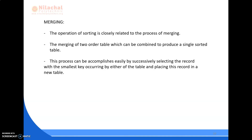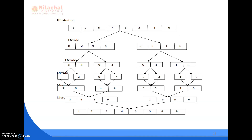Next we will learn about merging. The operation of sorting is closely related to the process of merging. The merging of two ordered tables can be combined to produce a single sorted table. This process is accomplished by successively selecting the records with the smallest key from either table and placing them into a new table. In the merging example, the total array is divided by a midpoint and goes on dividing until all sub-arrays are single elements. Here we have 8 elements, so by a mid value of 4 it is divided.